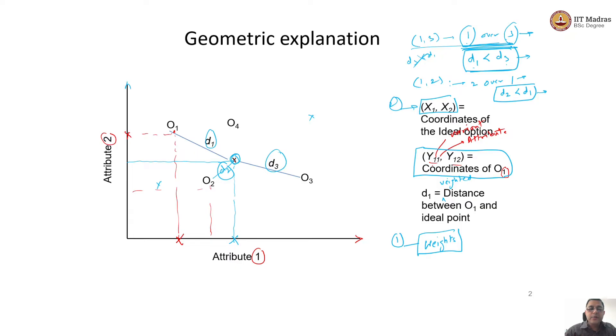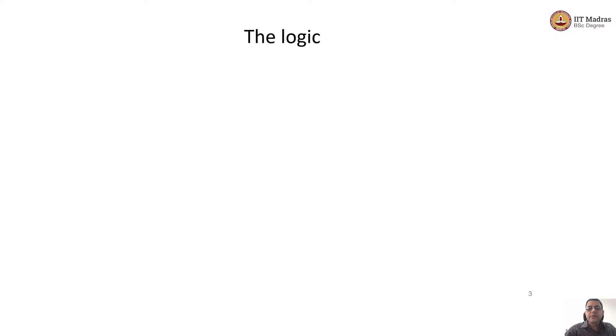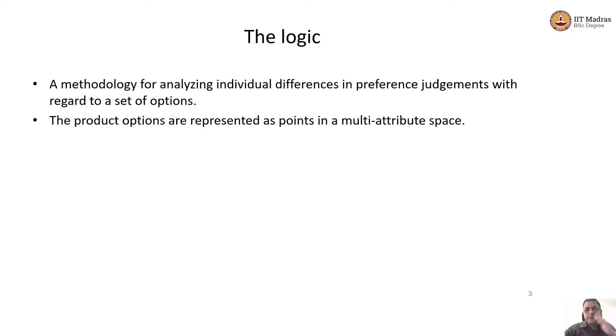The problem is never going to be on a simple two-attribute space. The problem is going to be on multi-attribute space, which is going to be difficult to imagine geometrically. Therefore, we gave an example of only two dimensions, two attributes, but the idea is still the same. Every product option is going to be defined as a point in multi-attribute space.